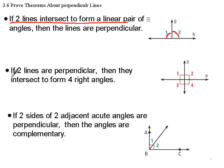Next one, if two lines are perpendicular, then they form four right angles. They intersect to form four right angles. So in other words, if you have one right angle, you actually have four right angles with the two intersecting lines.